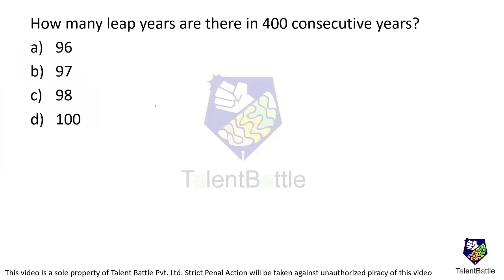How many leap years are there in 400 consecutive years? That means these 400 years are following each other continuously. We need to identify how many leap years are there in 400 continuous years. So in general, how do we identify whether a year is a leap year or not?